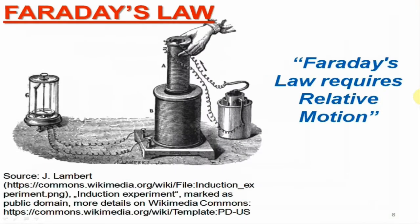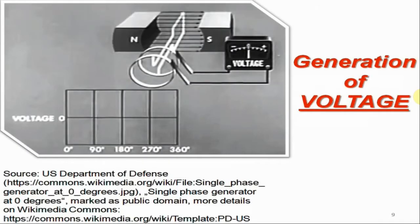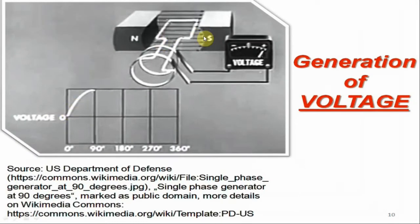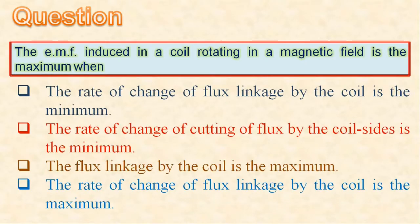As we know, generator action is based on Faraday's law of electromagnetic induction, which requires relative motion between the conductor and the magnetic field. As seen in this figure, at the vertical position of the coil plane, the flux linkages to the coil are maximum. When the coil sides slide parallel to the magnetic flux lines, no EMF is induced. At the horizontal position, flux linkage is minimum; however, there is maximum rate of change of flux, so the induced EMF is also maximum. Therefore, the last option — rate of change of flux linkage is maximum — is the correct answer.